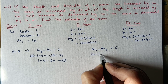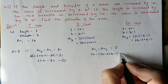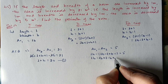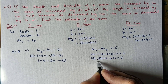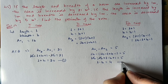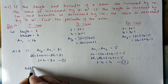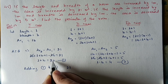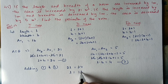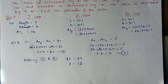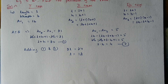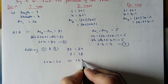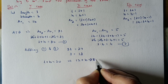After cancelling lb: l - b + 1 = 5, so l - b = 4. This is equation 2. Adding equations 1 and 2: 2l = 24, so l = 12. Substituting l = 12 into equation 1: 12 + b = 20, so b = 8.